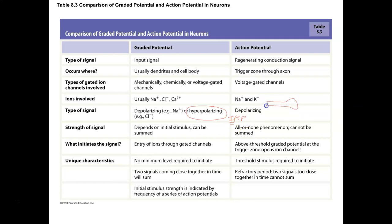So if you have an axon terminal synapsing with a dendrite, you're going to release neurotransmitter. That neurotransmitter is going to bind to a receptor. And if you have a hyperpolarizing event — let's say chlorine comes into this dendrite — chlorine has a negative charge so it's going to hyperpolarize the post-synaptic cell. If you hyperpolarize the post-synaptic cell, you're getting an inhibitory graded potential, going farther away from threshold. If it's a hyperpolarizing inhibitory post-synaptic potential, you're not going to get an action potential.